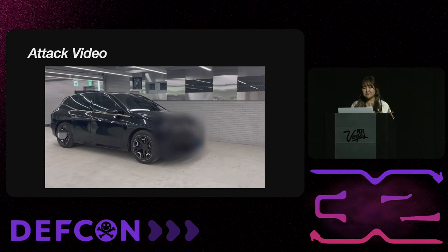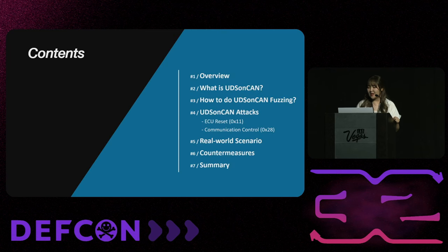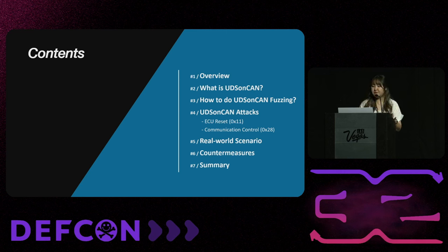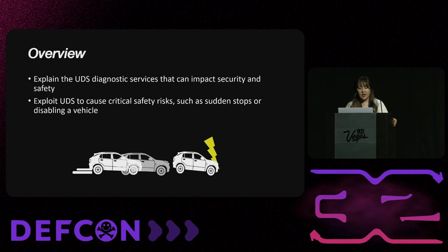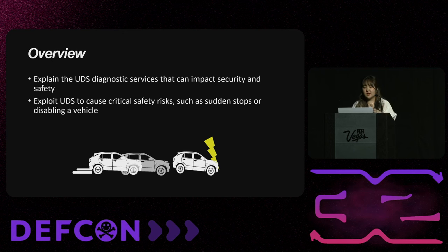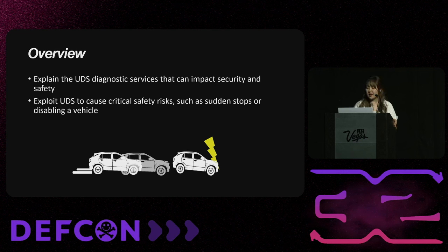Now I will explain why this happened, so please pay attention. The contents are as follows: first, I will explain UDS and fuzzing. Then I will explain the types of attacks that I did, and explain how to prevent these weak points. I found a weakness during the fuzzing test — the moving car was stopped or didn't move at all. I will explain how these problems are connected to UDS and what caused them.